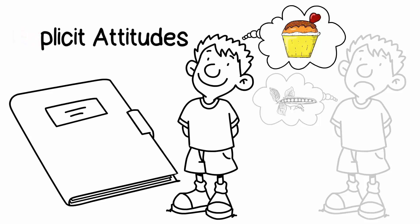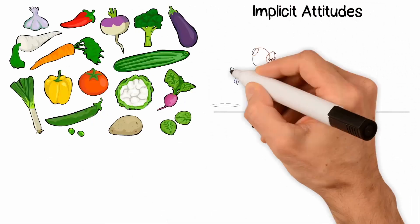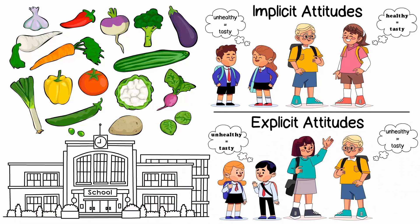However, their implicit attitudes were actually more positive towards healthy foods. Both implicit and explicit attitudes towards healthy foods became more favorable as the children entered and progressed through elementary school.